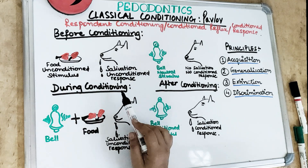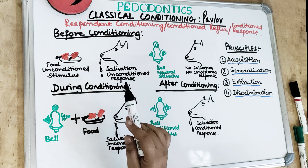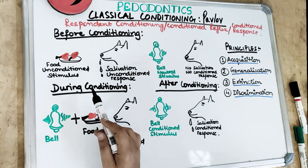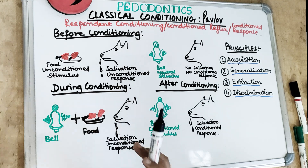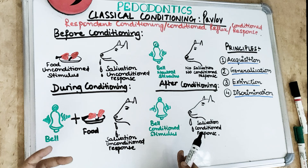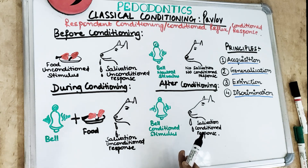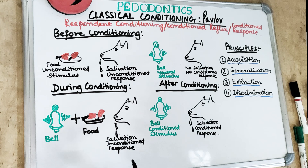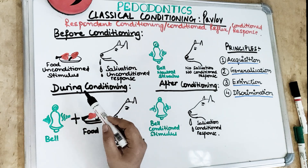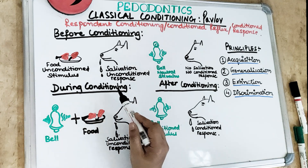Before conditioning, the unconditioned food stimulus causes a salivation response in the dog. Food is unconditioned because naturally we salivate when we look at food — it is not conditioned, it is something which happens naturally. So the unconditioned food stimulus shows salivation response in the dog.